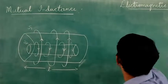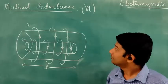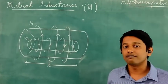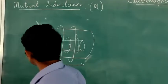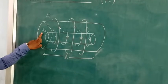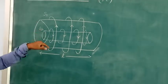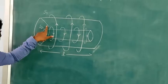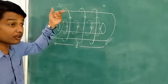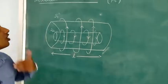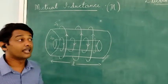The next topic in the chapter electromagnetic induction is mutual inductance. It is represented by the term capital letter M. Mutual inductance is the phenomenon in which EMF is being induced in one coil due to change in magnetic flux in the neighboring coil. Consider two solenoids S1 and S2 — EMF is induced in S2 because of S1, or in S1 because of S2. This phenomenon is called mutual inductance.